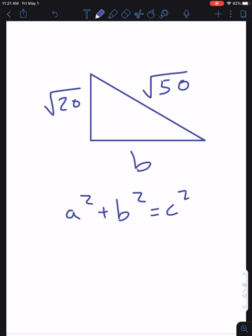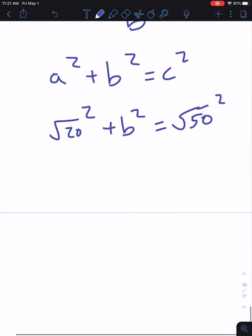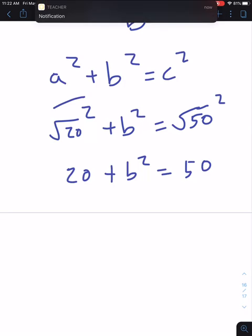Let's start filling it out. So a squared is root 20, so root 20 squared, plus b squared equals root 50 squared. Now root 20 squared is going to be 20, plus b squared, and the square root of 50 squared is just going to be 50.